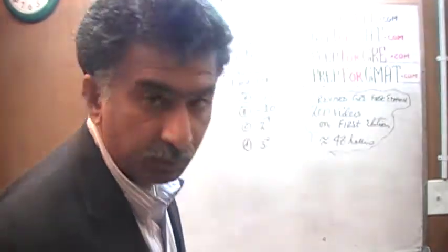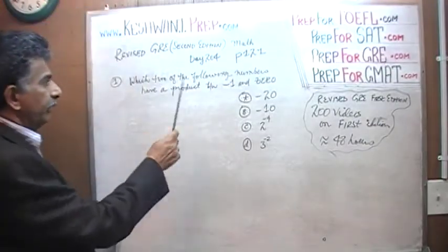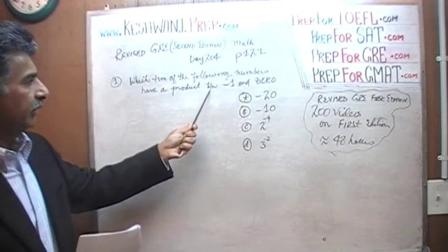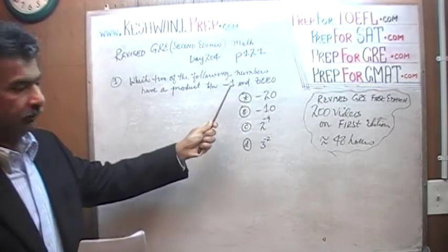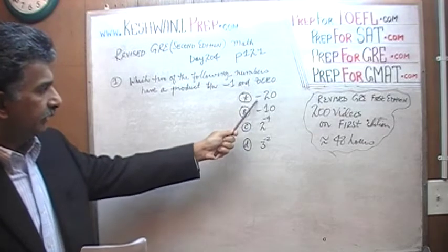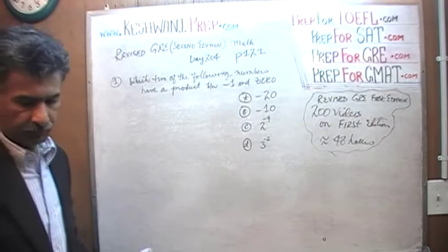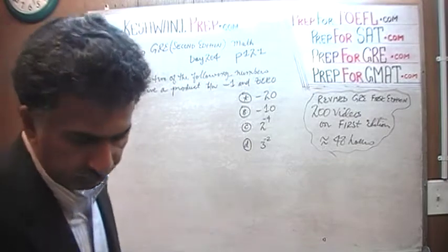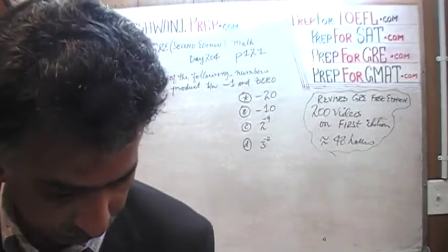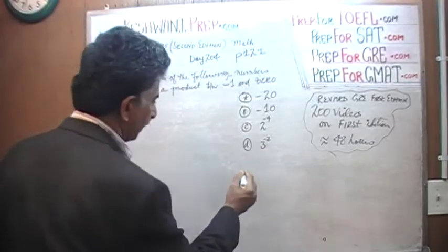The problem is already on the blackboard. It says: which of the following numbers have a product between negative 1 and 0? Between negative 1 and 0. Out of these four numbers — negative 20, negative 10, 2 raised to negative 4, and 3 raised to negative 2. The very first thing we need to do is make sure we understand what these figures are.